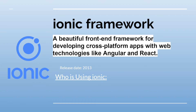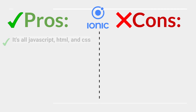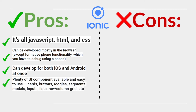Ionic is a beautiful front-end framework for developing cross-platform apps with web technologies like Angular and React, released in 2013. Used by NBC and EA. Pros: it's all JavaScript, HTML, and CSS; can be developed mostly in the browser, except for native phone functionality which requires debugging on a device; and you can develop for both iOS and Android at once.